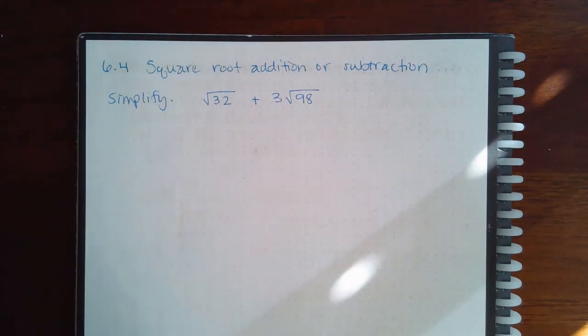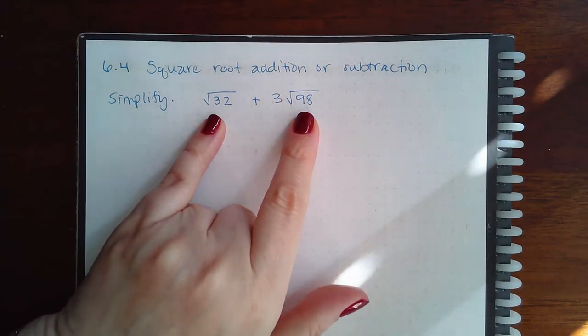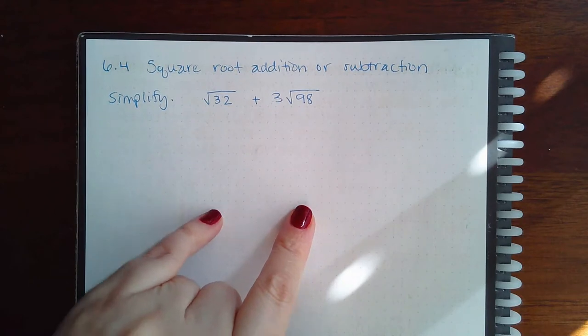However, we can simplify them and then hopefully the radicands will match and we'll be able to actually add and subtract. These are like the same thing as saying these are not like terms and therefore cannot be combined until they look like they're like terms.